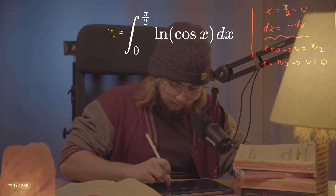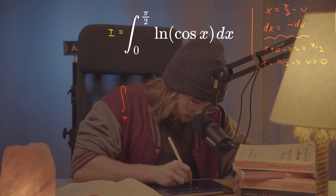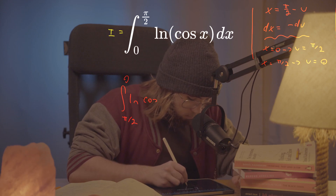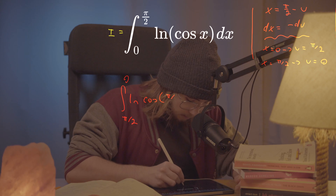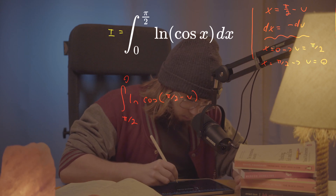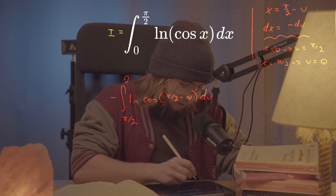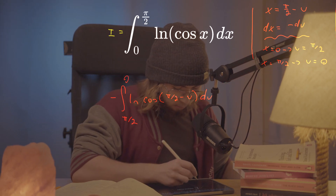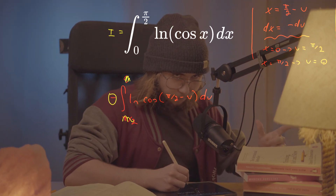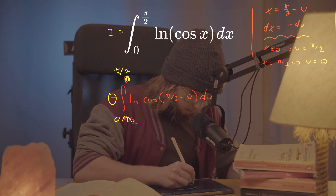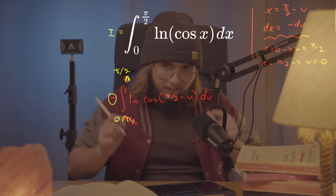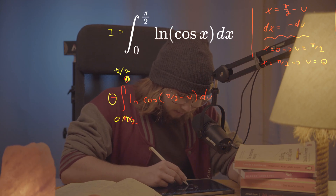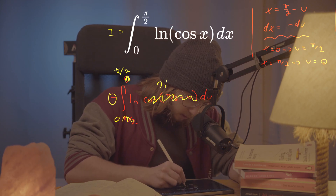I'm just going to plug it into the integral right now. So I'm going to get the integral between π/2 and 0 of the natural log of cosine of (π/2 minus u), but with negative du. So I just put this negative sign in front of the integral, and I can use it to switch the order of bounds — 0 on the bottom and π/2 on top. And nicely, cosine of (π/2 minus u) is just sine of u.